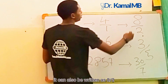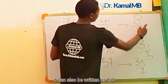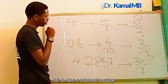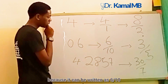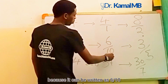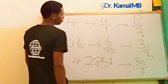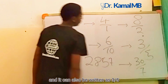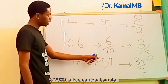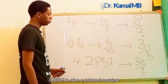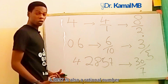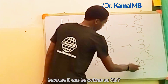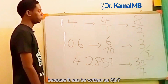It can also be written as 8 over 2. 0.6 is also a rational number because it can be written as 6 over 10, and it can also be written as 3 over 5. 4.2857 is also a rational number because it can be written as 30 over 7.